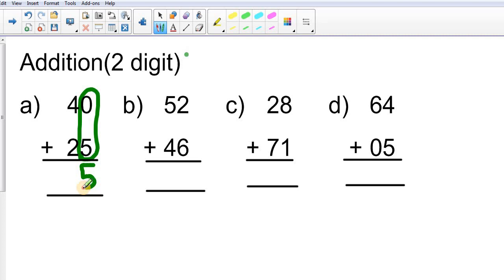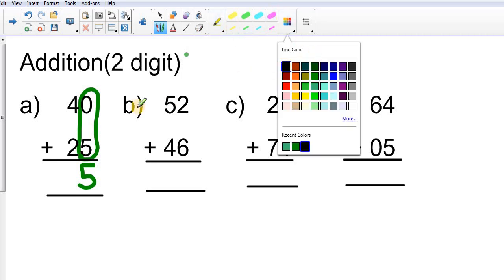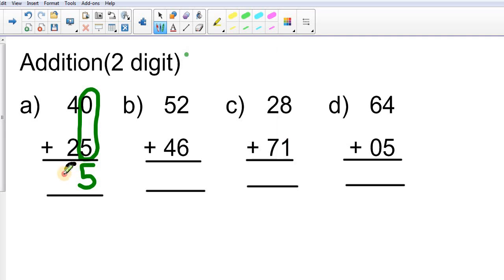5 is my ones digit answer. Now I will go on to tens and I am going to use black color for tens and take 4 and 2. I am standing on 4. Always take the bigger number. I have to move two steps ahead, 5 and 6. So my tens number is 6. 65 is my answer.